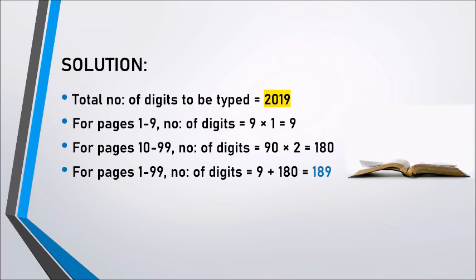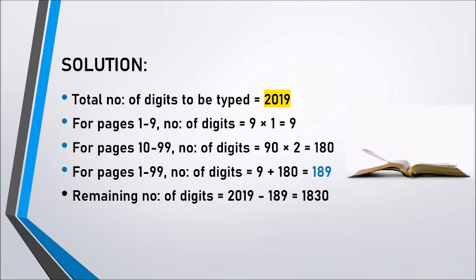Now, let us see how many more digits are required. The number of digits required to be typed is equal to 2019 - 189 = 1,830 digits.